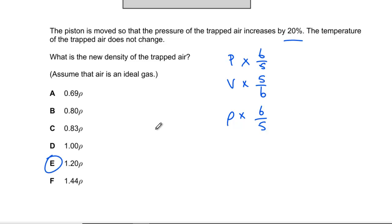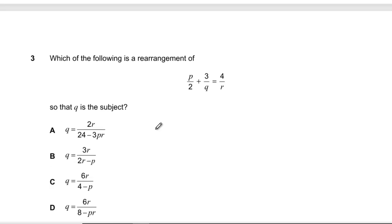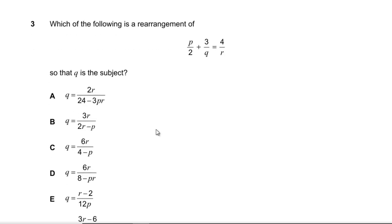Question 3: Which of the following is a rearrangement of this where q is the subject? 3 over q is going to be, let's get it all over 2r, so 8 over 2r minus pr over 2r. So q is going to equal 6r over (8 minus pr), which is D.